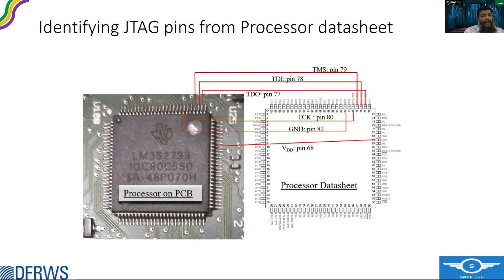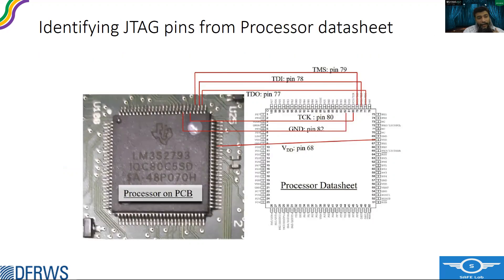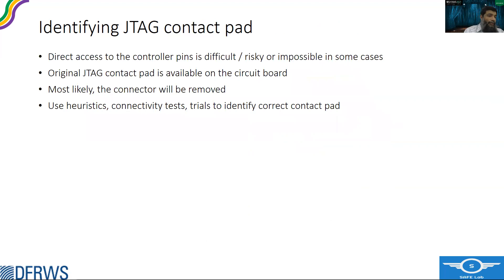The next step is to identify the JTAG pins from the processor data sheet. If available, the data sheet clearly tells us which pin is the JTAG pin, mode selector, or input/output pin, so we can locate those pins on the processor IC. The next step is to identify the JTAG contact pad. Although we identify the pin on the processor, it is very risky to use those pins directly for extracting information or controlling the TAP controller. Vendors use a contact pad for this purpose, and after circuit testing, they usually remove the connector — but the contact pad can still be found on the circuit board.